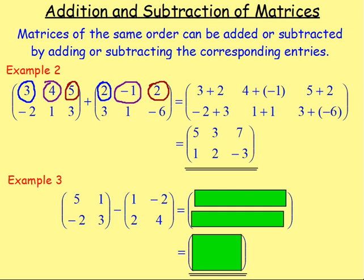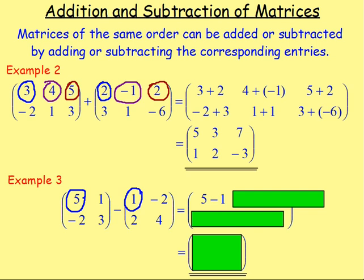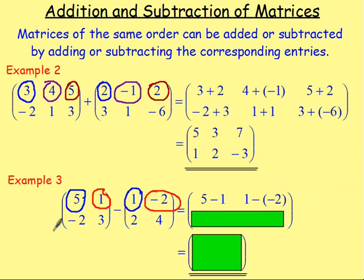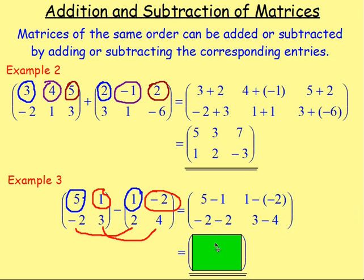Let's try example 3. The matrices have the same order — two rows, two columns each — so we can subtract these matrices. Starting with first row, first column: 5 take away 1. For the next entry, first row second column: 1 take away negative 2. Then the second row: negative 2 take away 2, and 3 take away 4. That means the answer is 4 and 3 for the top row, and negative 4, negative 1 for the bottom row. And that is the addition and subtraction of matrices.